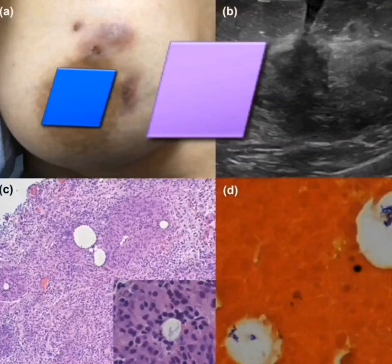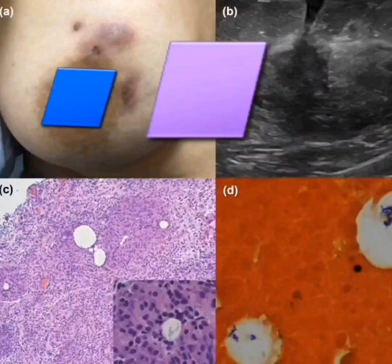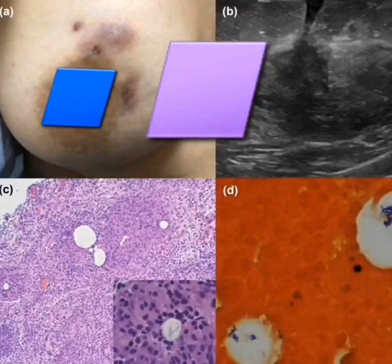Granulomatous Mastitis is an episodic breast disease mostly affecting premenopausal women. Patients can have severe symptoms for a while, but then symptoms clear up with or without treatment and the breasts almost return to normal.